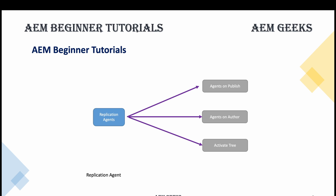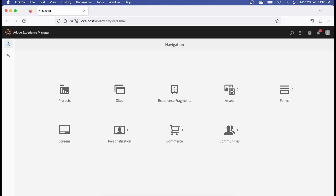Creating a flush agent on publish has some advantages over creating it on author. You create it on author and then move it to publish, where it will function. Agents on author is the standard setup — you create all your replication agents there. Activate tree is an out-of-the-box feature that lets you activate an entire site tree in one go, without creating it manually.